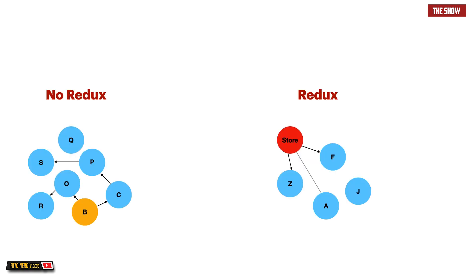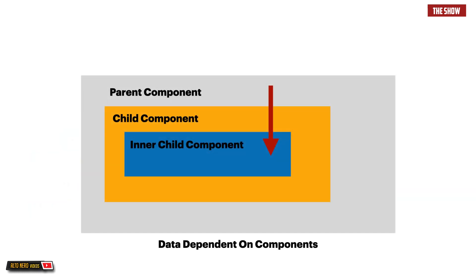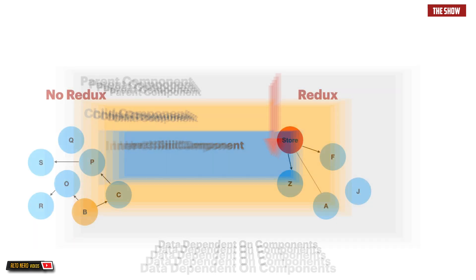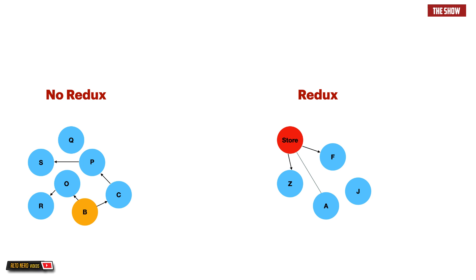Let us look at an application that uses Redux and one that does not. In the application without Redux, each circle is basically a component. Imagine these components need to communicate between each other — they share a state. If the state changes in the gold circle component, that component needs to communicate the state to C, to P, to O, to R — step by step to all these components. For bigger projects you could have thousands of components, and communicating state between all of them is a lot of work.